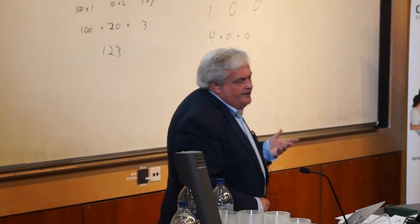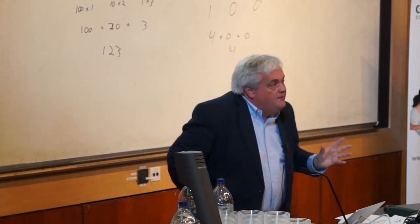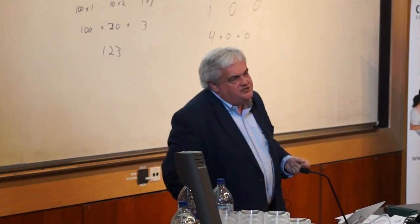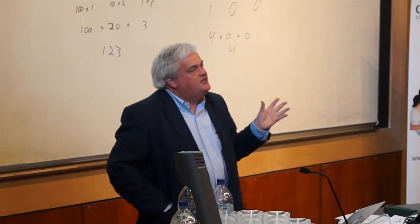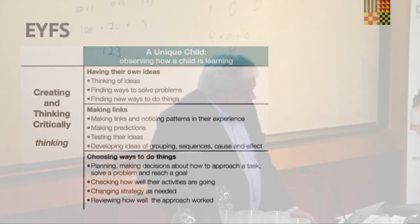This starts even earlier than primary. Let's not forget the foundations of what we do in the Early Years Foundation Stage. In Development Matters you have characteristics of effective learning — that a child, before they leave reception, should be creating and thinking critically, finding ways to solve problems, finding new ways to do things, making links, noticing patterns, making predictions, testing their ideas, and developing ideas of grouping, sequence, cause and effect.